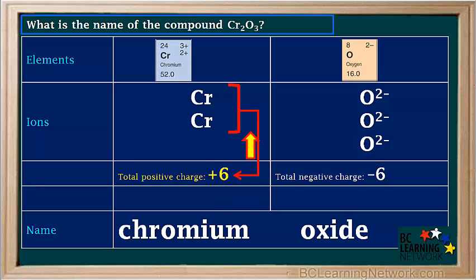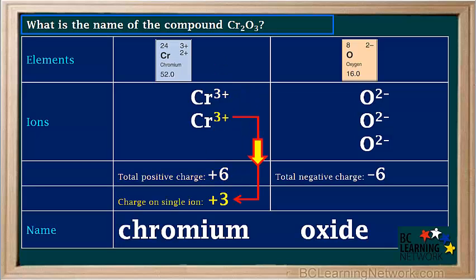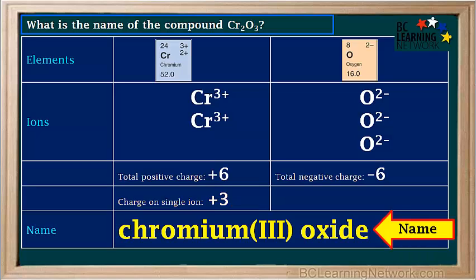We can use this to find the charge on each chromium ion. We have two chromium ions, so if two of them add up to positive six, it means that each chromium has a charge of positive three. Because the roman numeral indicates the charge on a single ion of a metal, the roman numeral we use here is three. So the name of this compound is chromium(III) oxide.